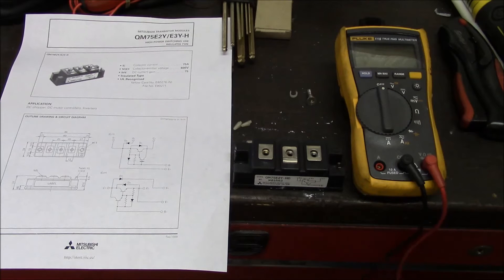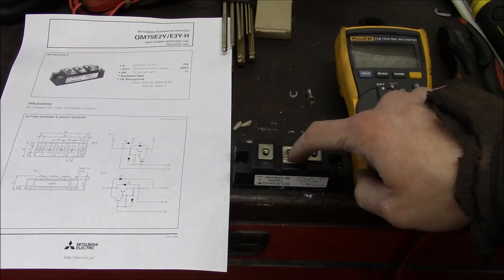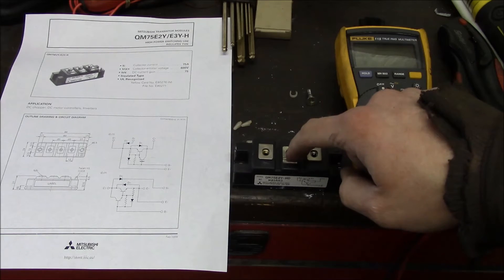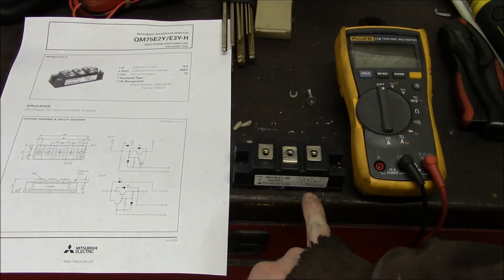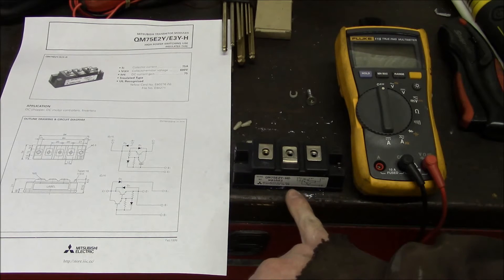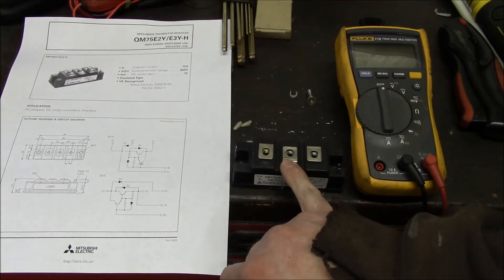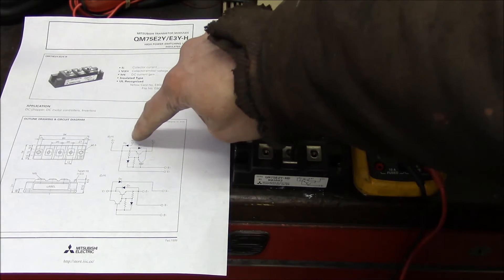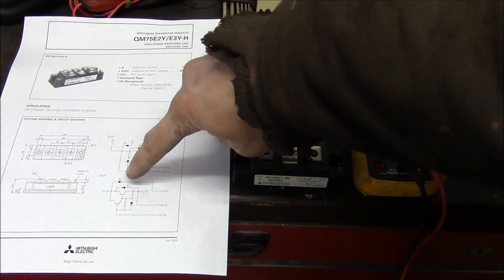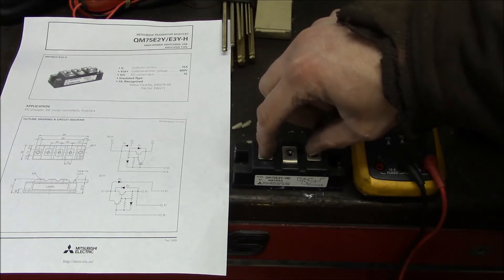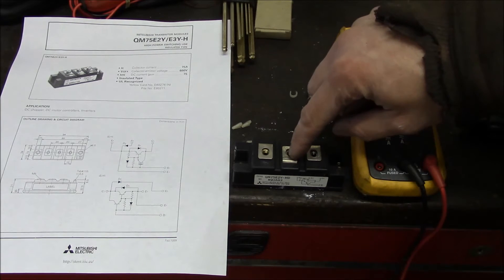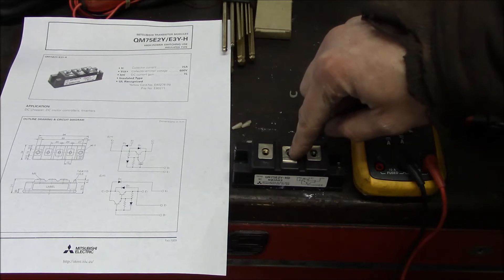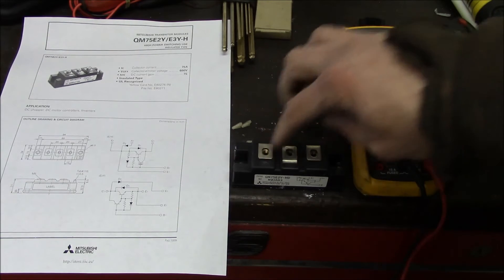All right, so this is the culprit that I replaced. This is what was causing all the problems in that Yaskawa spindle drive. So this is a Mitsubishi QM75E2Y-HD. And this is the data sheet for it. So it's basically just a Darlington transistor. So it's a small transistor that turns on a large transistor. And there's a 2Y and a 3Y. And it's the same housing, but the only difference is the direction, basically, of the diode.